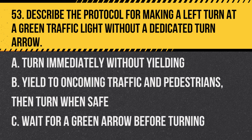Question 53. Describe the protocol for making a left turn at a green traffic light without a dedicated turn arrow. A. Turn immediately without yielding. B. Yield to oncoming traffic and pedestrians, then turn when safe. C. Wait for a green arrow before turning. Answer: B. Yield to oncoming traffic and pedestrians, then turn when safe. Even with a green light, left-turning drivers must yield to oncoming traffic and pedestrians.